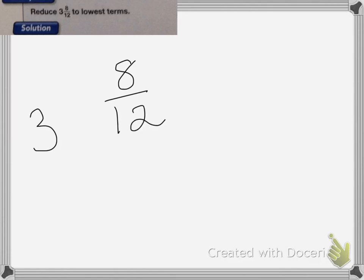Again, I need to think, what number can I divide both these by? Well, I can divide them both by 2, but I can also divide them both by 4. So I'm going to divide both the top and the bottom by 4. 8 divided by 4 is 2. 12 divided by 4 is 3. 2 thirds. So my answer is going to be 3 and 2 thirds.